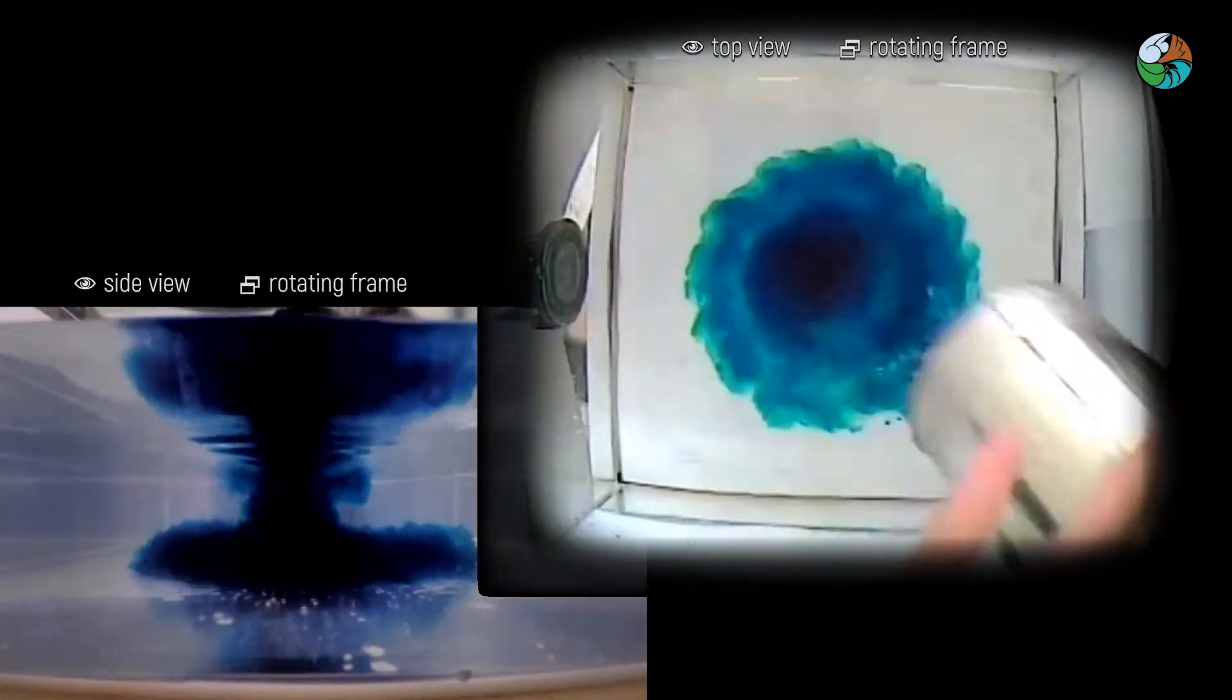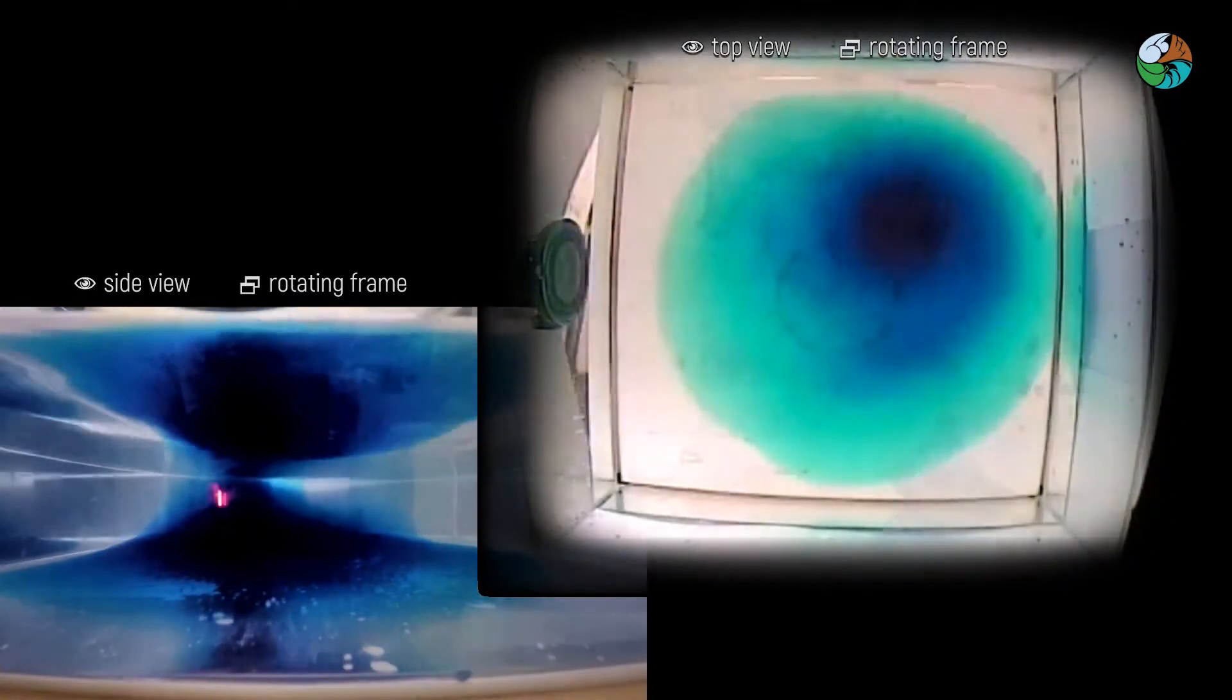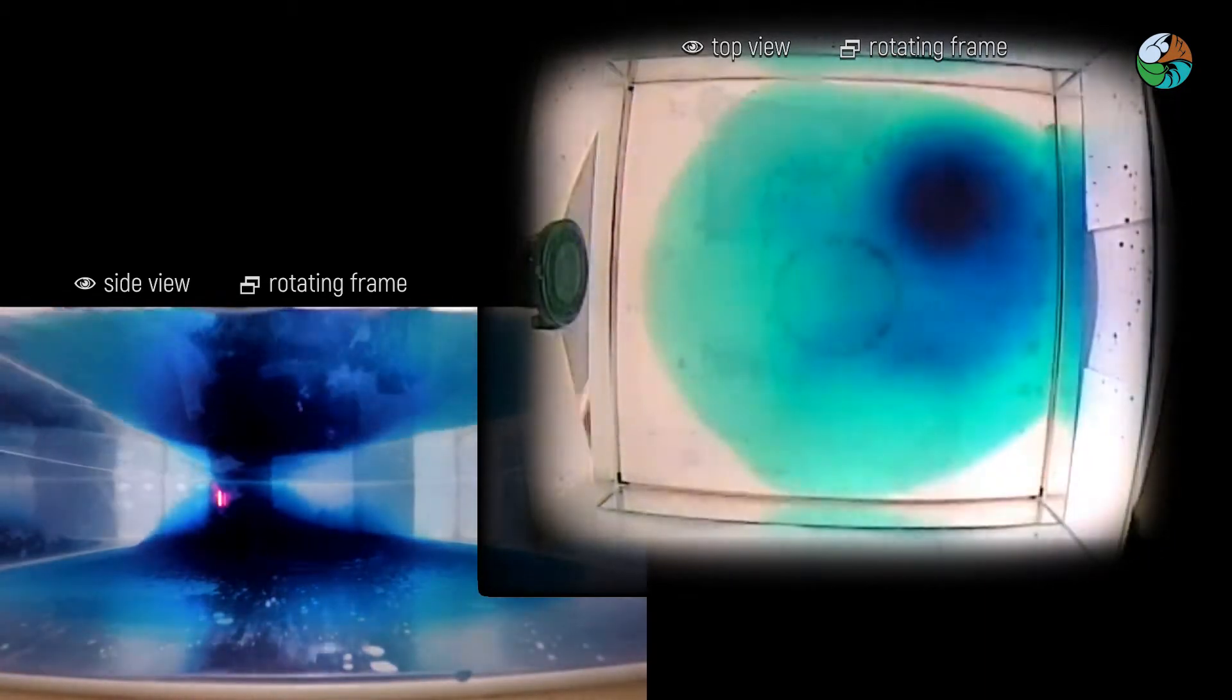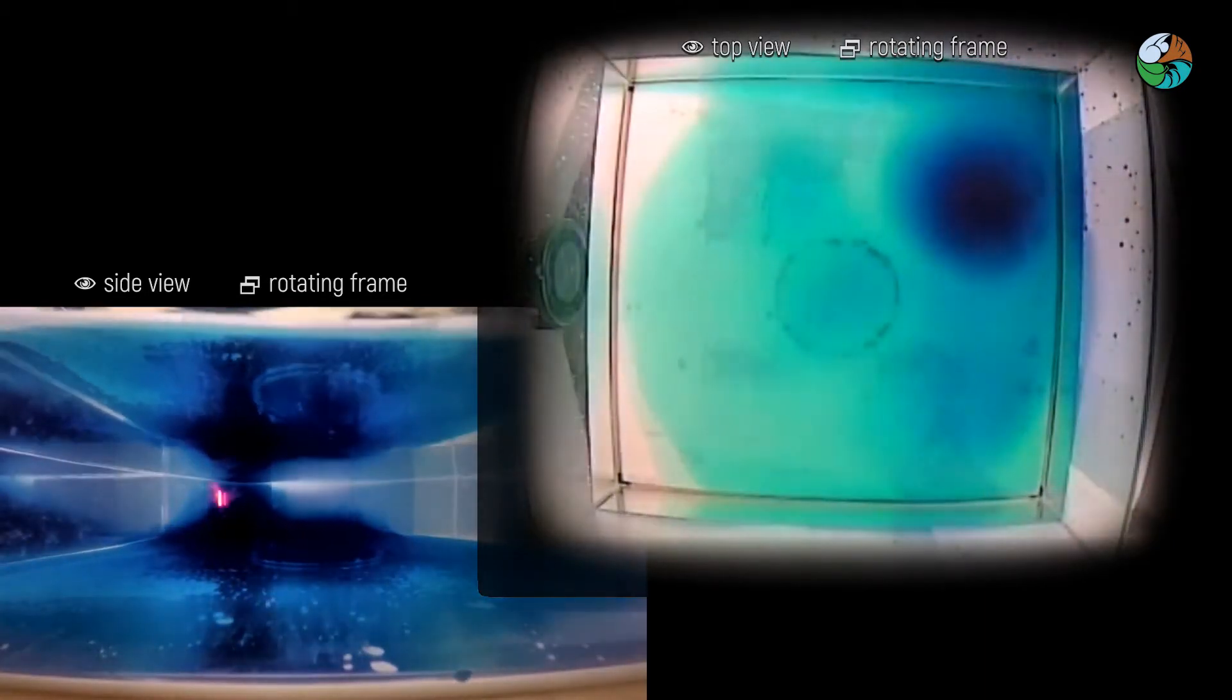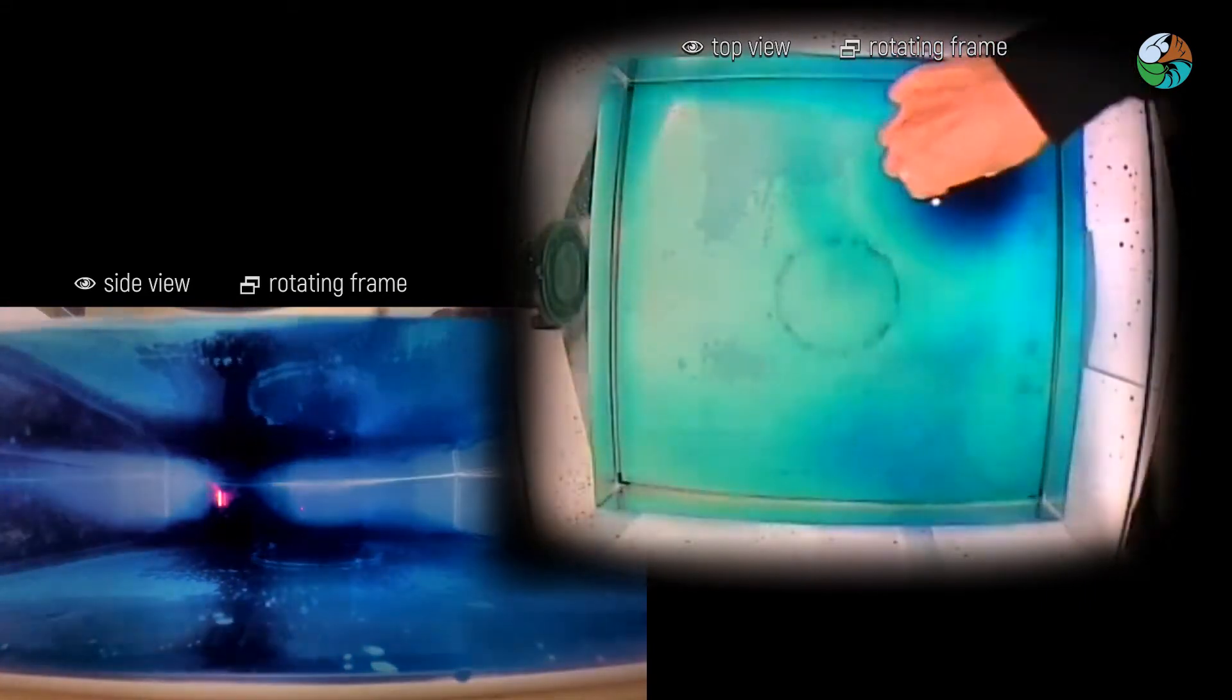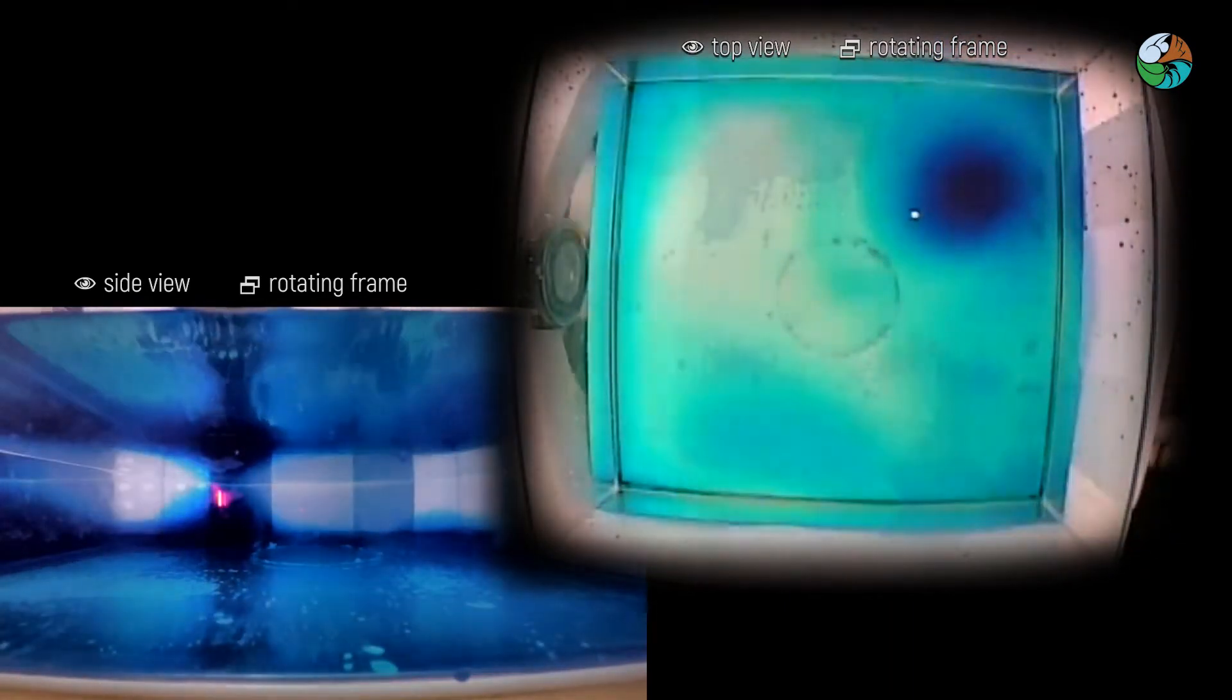Carefully remove the can. Observe from above and from the side what happens when the salt water meets the fresh water. Add paper dots to visualize the water flow at the surface.